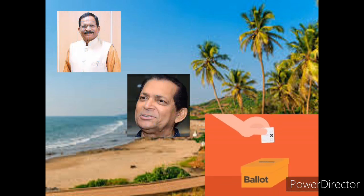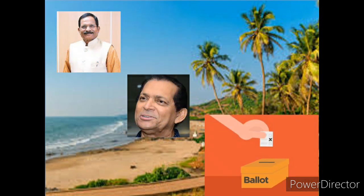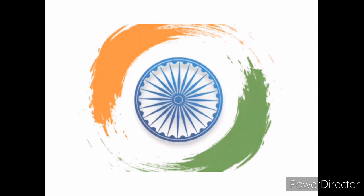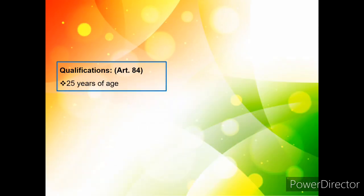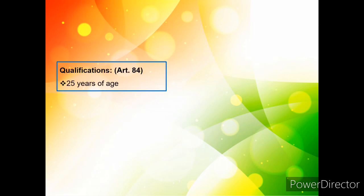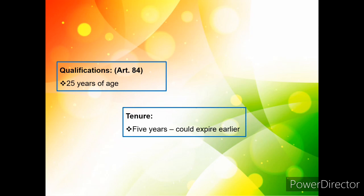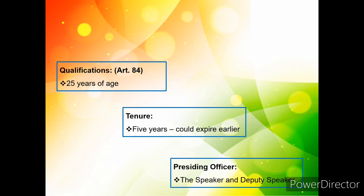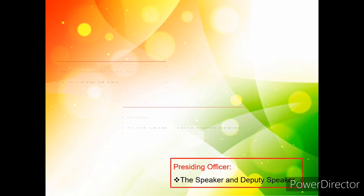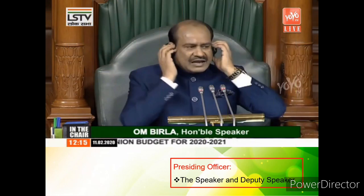India's smaller state Goa sends 2 MPs to the Lok Sabha — one from North Goa and the other from South Goa. To contest elections to the Lok Sabha, the qualifications remain the same as the Rajya Sabha with one difference: a person has to be at least 25 years of age. The term of the Lok Sabha is 5 years but can be dissolved earlier. The presiding officer of the Lok Sabha is the Speaker, assisted by the Deputy Speaker.